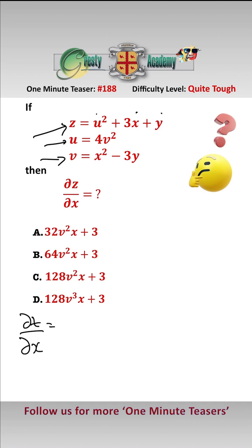So dz/dx equals, let's differentiate that with respect to u first, that's 2u multiplied by the partial derivative of u with respect to x. Add, differentiating this is just 3. So we need to know what du/dx is.